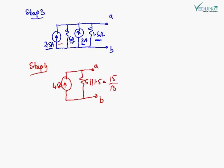The other current source has a magnitude of 2 ampere, with shunt resistances of 5 ohm and 1.5 ohm. I have replaced these two current sources by a single current source. Since the direction of current is the same, they are summed up to give 4.5 ampere. The equivalent resistance is the parallel combination of 5 ohm and 1.5 ohm, which comes out to be 15 upon 13 ohm. This is the final single source circuit.